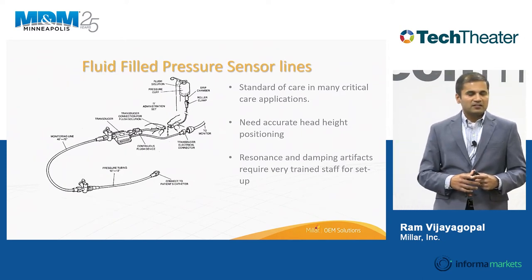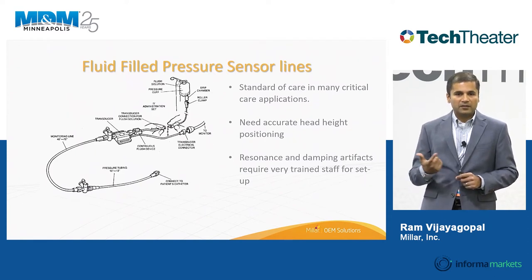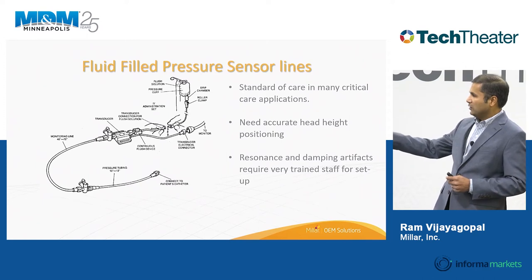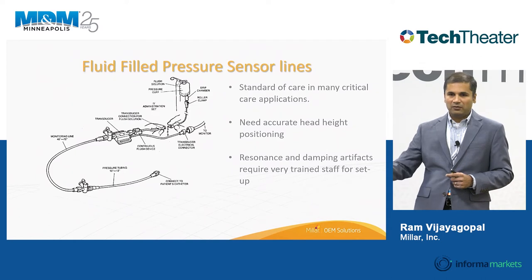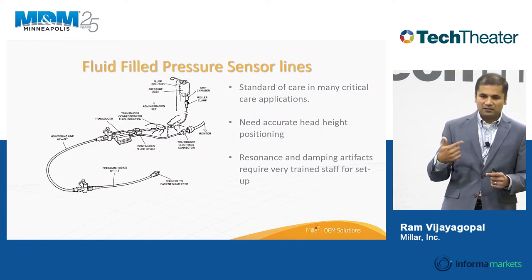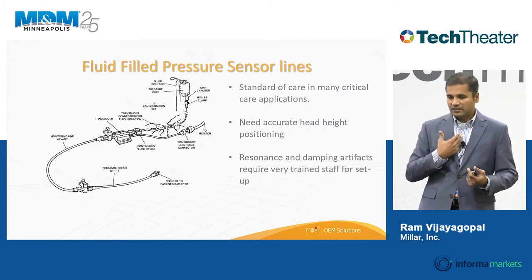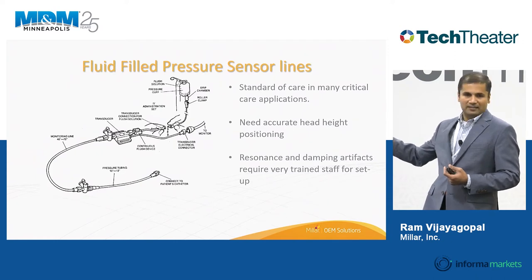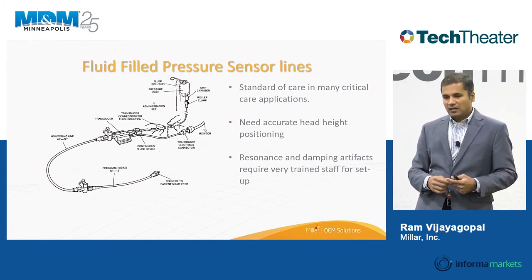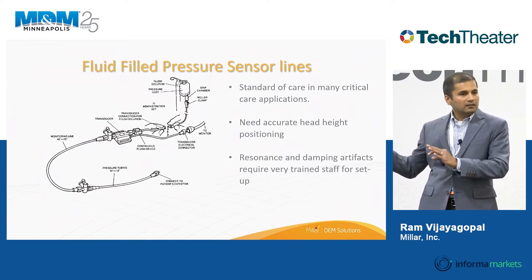Fluid-filled pressure lines are still in use in a variety of traumatic and emergency care applications — they've been in use for over five decades. In a fluid pressure line, the sensor is located outside the body, and a saline-filled tube runs from it to a catheter inserted into the vasculature. Pressure is communicated from inside the body through this fluid to the sensor. These lines suffer from challenges like resonance and damping, require a lot of expertise to set up, but are still a standard of care in many critical care applications today.